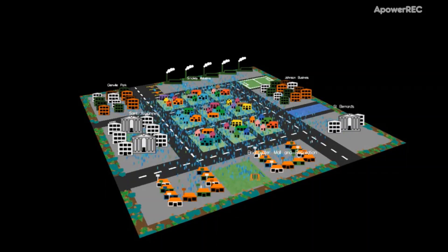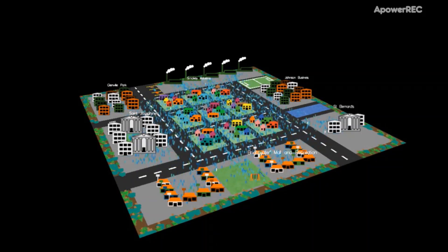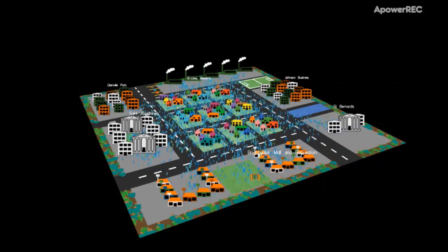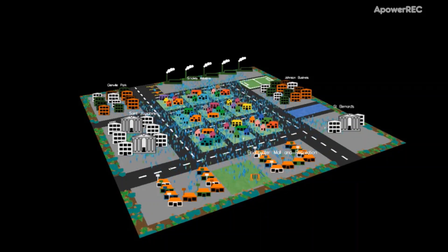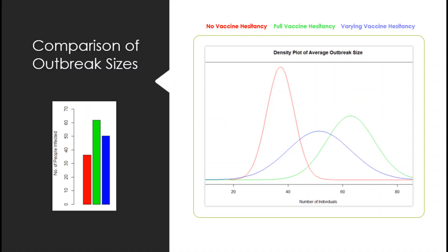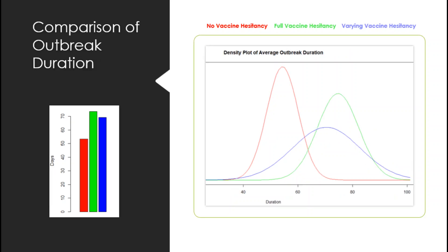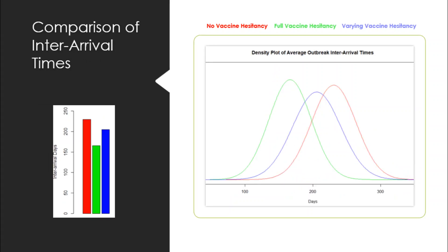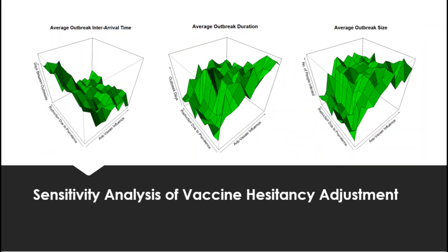We ran this simulation a whole lot of times, changing the amount of influence that the people who are rarely against vaccines have, and adjusting how much people start to fear the disease as it grows. We then collected information on every outbreak from each of these runs, and did an analysis looking at the number of vaccines for the disease, the change in outbreak size, duration, and frequency when there were more anti-vaxxers in the system. We also compared the amount of influence the anti-vaxxers had, and how much people were scared of the disease as it grew.